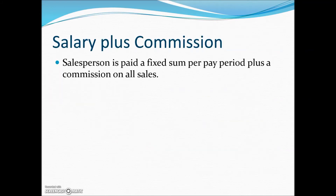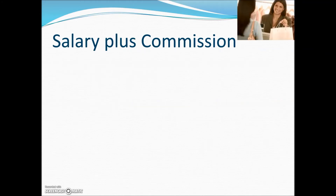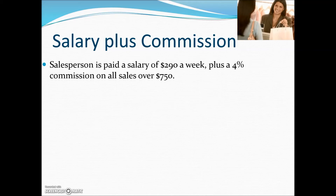With a salary plus commission, the salesperson is paid a fixed sum per pay period plus a commission on all sales. This method is commonly used by large retail stores. Gross earnings are found by adding the fixed salary amount plus the commission amount. In this example, the salesperson is paid $290 per week plus a 4% commission on all sales over $750, which represents the expected sales quota covered by the base salary.